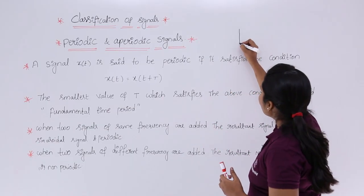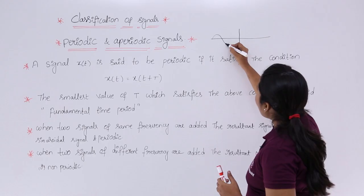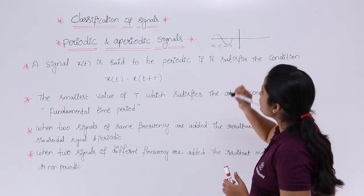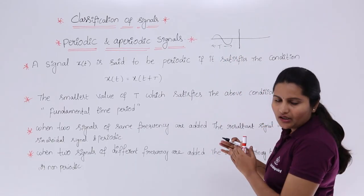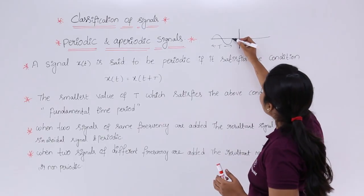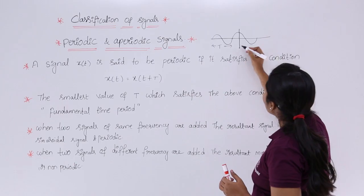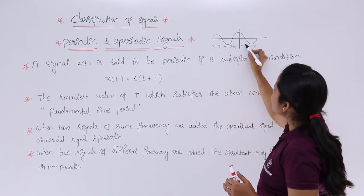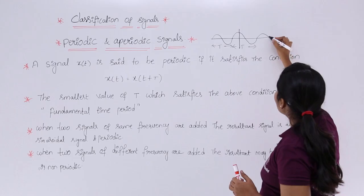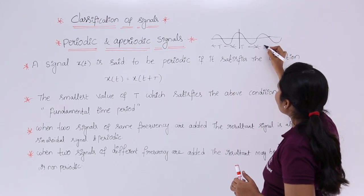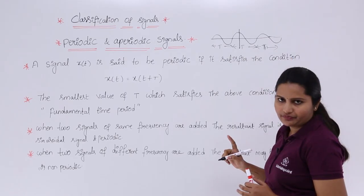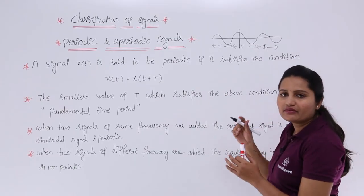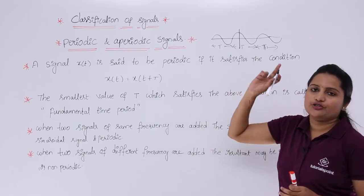For example, consider a signal where the time period is T. For the next T, we need to repeat the same signal. So at 2T, the same signal repeats, and at 3T also you are having the same cycle. After 2T, after 3T, after 4T, you need to repeat the same signal which we are having initially. Then that signal is said to be periodic.